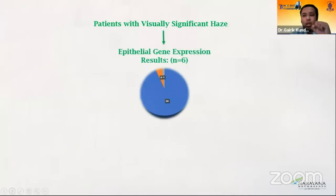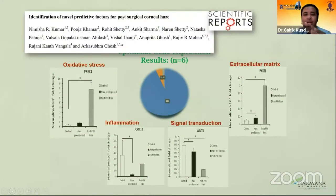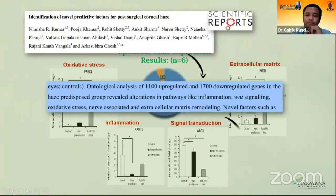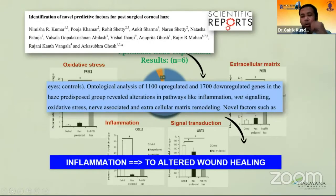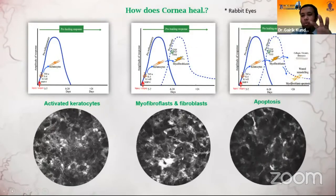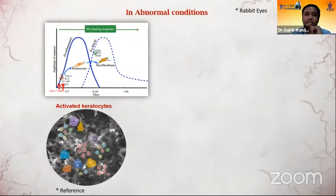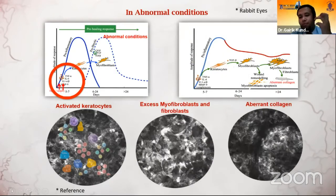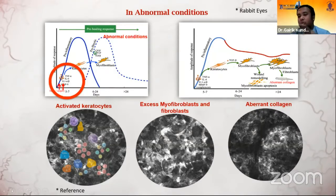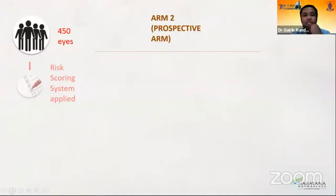We came across this information from published work which looks at predictive factors that help in developing post-surgical HAZE. What we found is that inflammation did lead to altered wound healing. Post-PRK, in an ideal situation, there would be activation of keratocytes, leading to formation of myofibroblasts and fibroblasts, which under normal healing conditions would undergo apoptosis and not lead to HAZE. But in cases of raised preoperative inflammation, these activated keratocytes lead to excess myofibroblasts which do not apoptosize and can lead to formation of aberrant collagen — and that's what leads to more HAZE post-PRK.